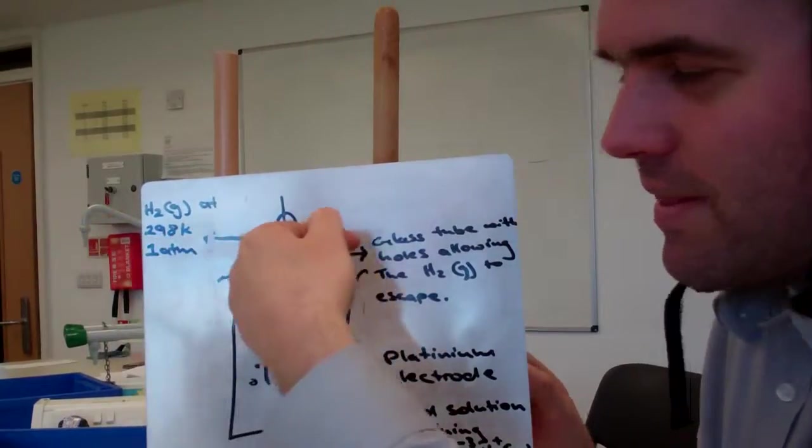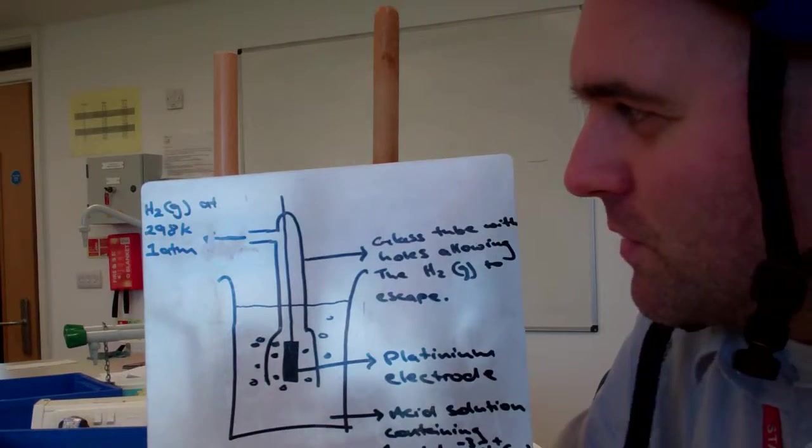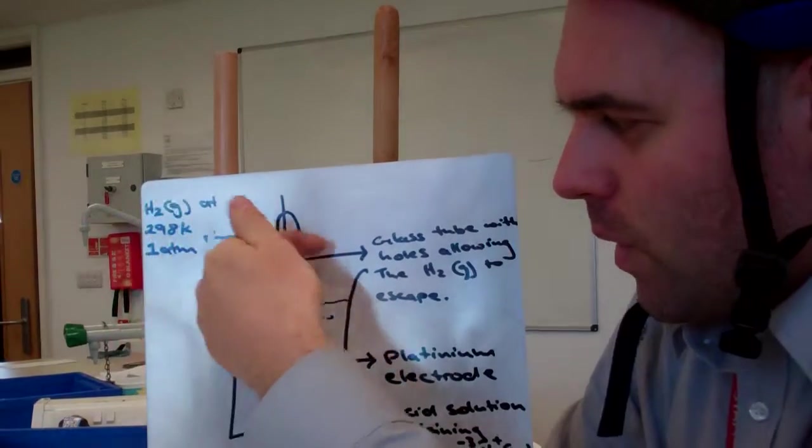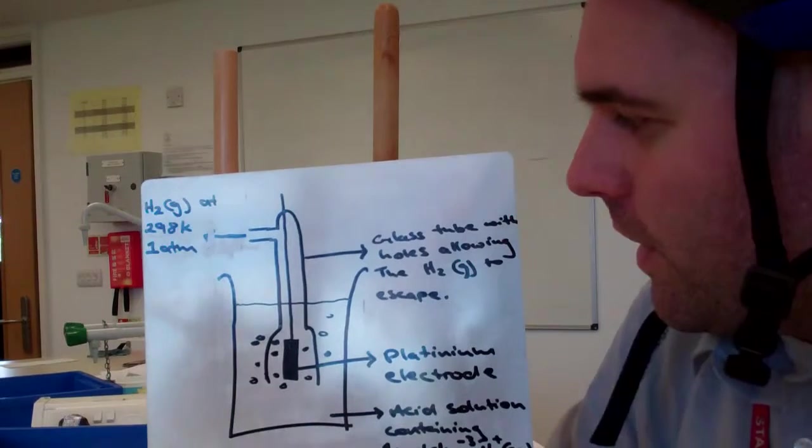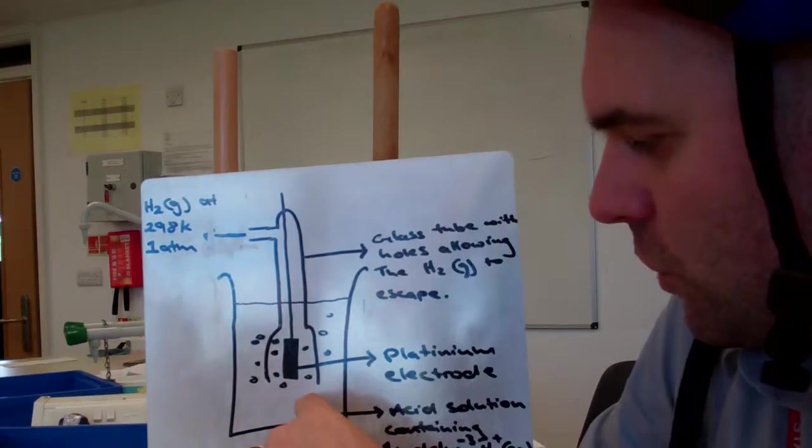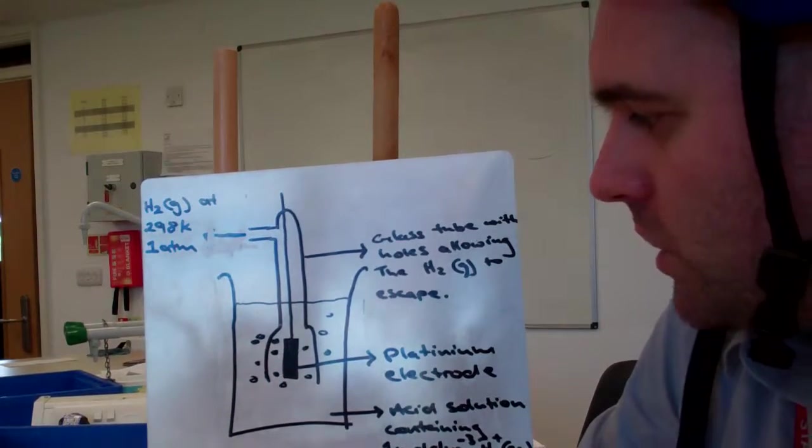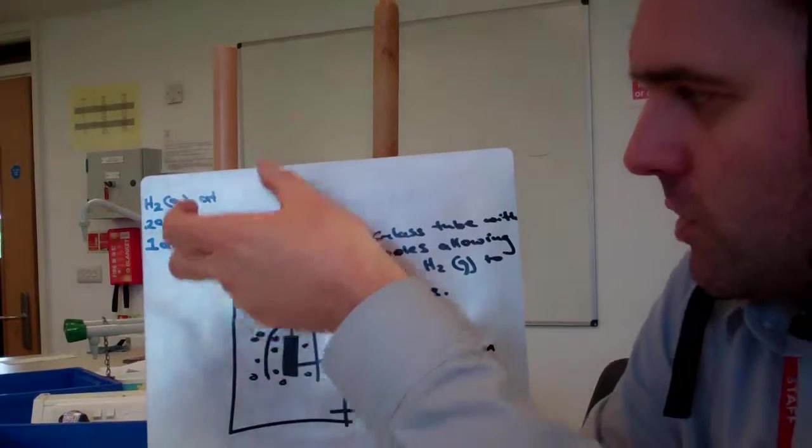Okay, the hydrogen going in there is pumped in at 1 atmosphere. Okay, 1 atmosphere pressure always to be standard. Temperature of 298 Kelvin. And here we have an acid solution of 1 mol per dm³, so HCl. We've got a glass tube to stop the hydrogen escaping. We've got a platinum electrode to conduct electricity.